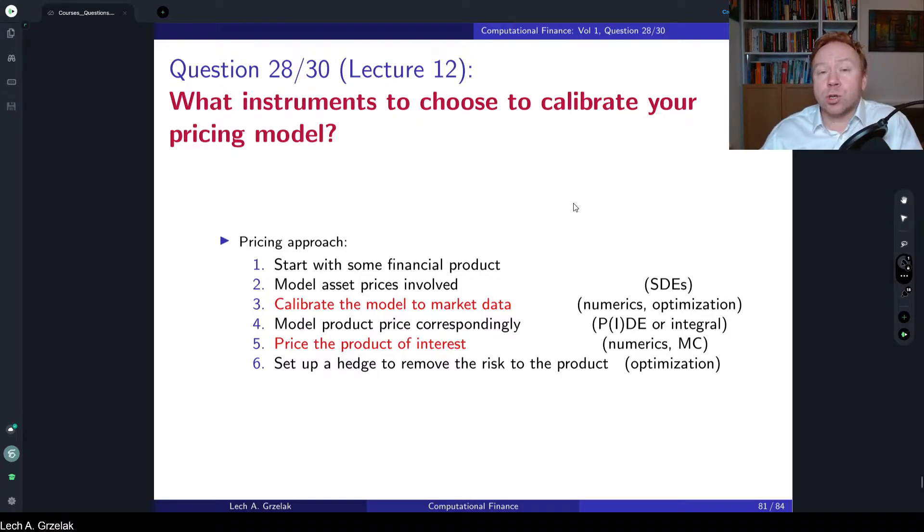A very short answer to this rather involved question will be always use the hedging instruments as the calibration instruments. So what I mean here, if we have market instruments, market data, for example implied volatilities, yield curve and so on, and our payoff, our exotic payoff that we want to price is sensitive to those market instruments, then those instruments should be used somehow in your calibration routine.